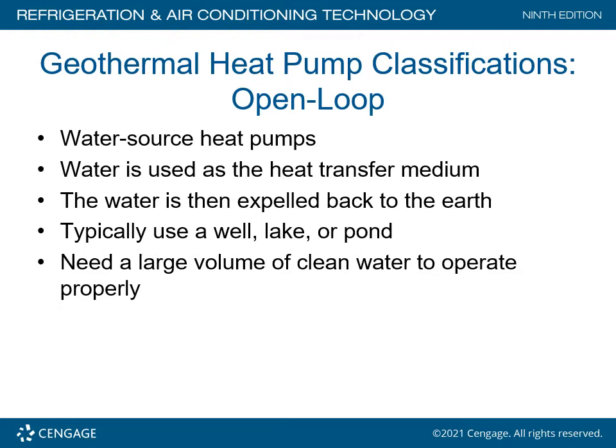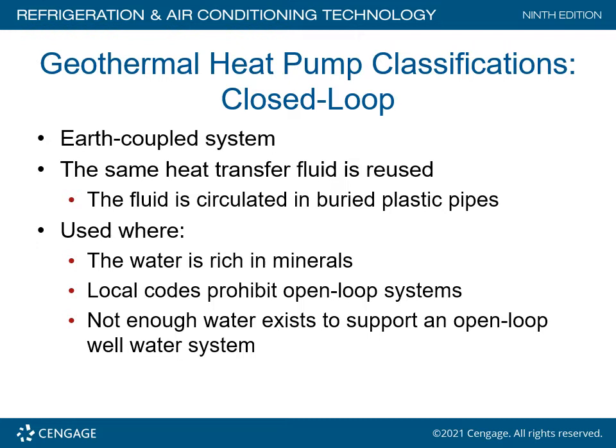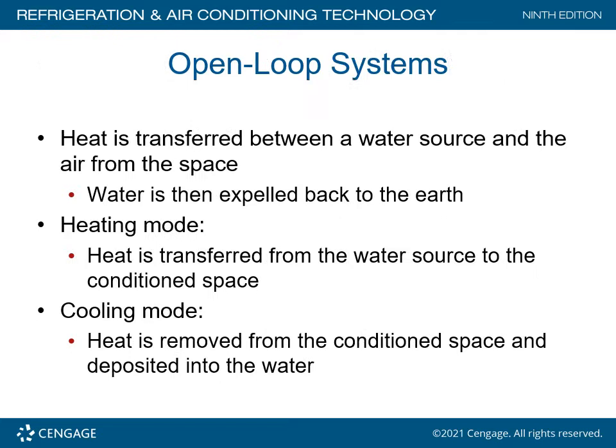Geothermal heat pump classifications. The first one would be the open loop system, which is a water source heat pump. Water is used as the heat transfer medium. The water is then expelled back to the earth. Typically used with a well, a lake, or a pond, and needs a large volume of clean water to operate properly. The closed loop system utilizes the earth-coupled system, where the same heat transfer fluid is reused. The fluid is circulated through buried plastic pipes, used where water is rich in minerals, local codes prohibit open loop systems, or not enough water exists to support an open loop well water system.